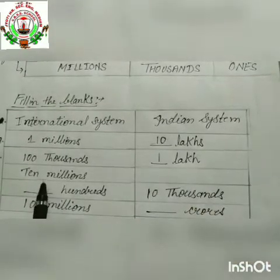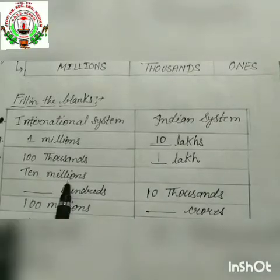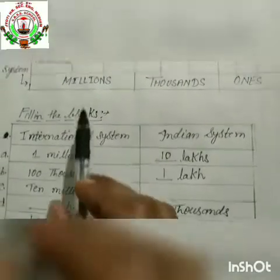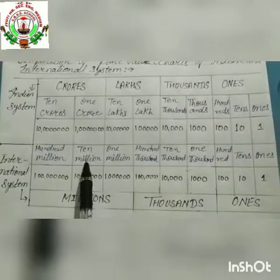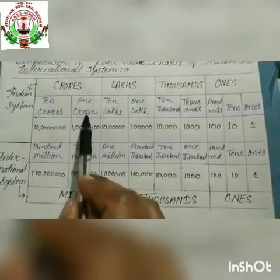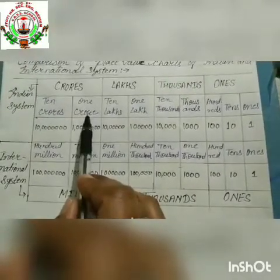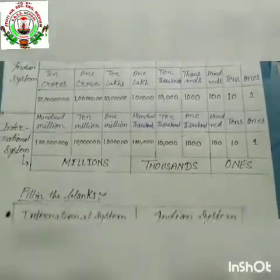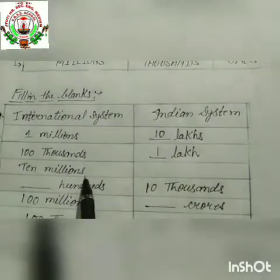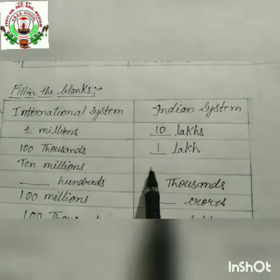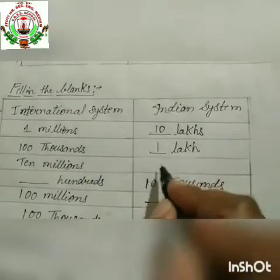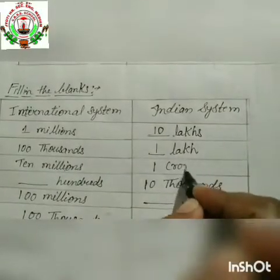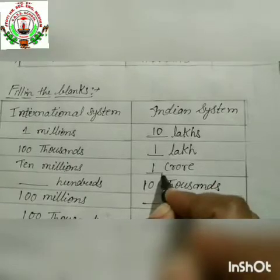Now the third blank is ten million. Looking at the chart again, ten million is equal to one crore in the Indian system. So we write: ten million equals one crore.